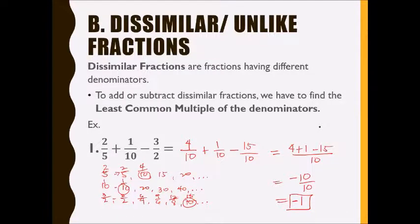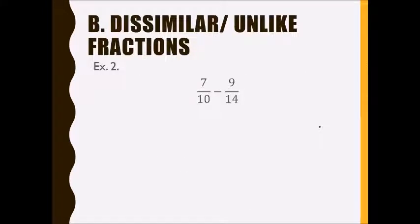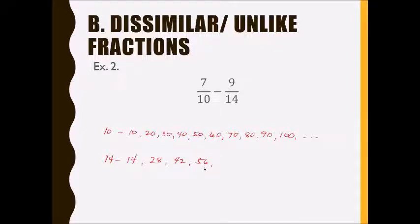Let us have our last example. We have seven-tenths minus nine over fourteen. Multiples of ten: ten, twenty, thirty, forty, fifty, sixty, seventy, eighty, ninety, one hundred. For fourteen: fourteen plus fourteen is twenty-eight, plus fourteen again is forty-two, plus fourteen again is fifty-six, plus fourteen is seventy. Here you can see they both have seventy in common.